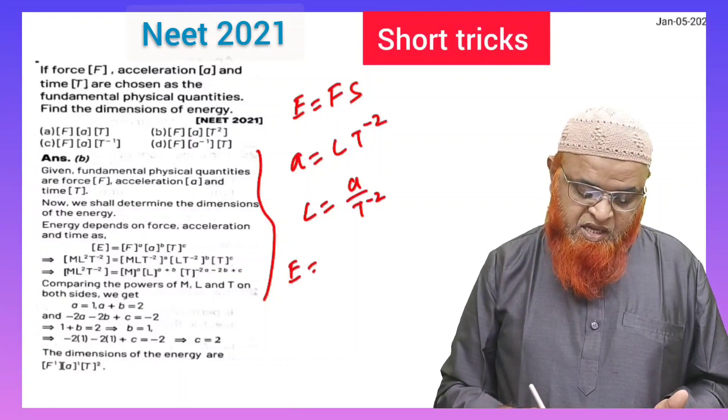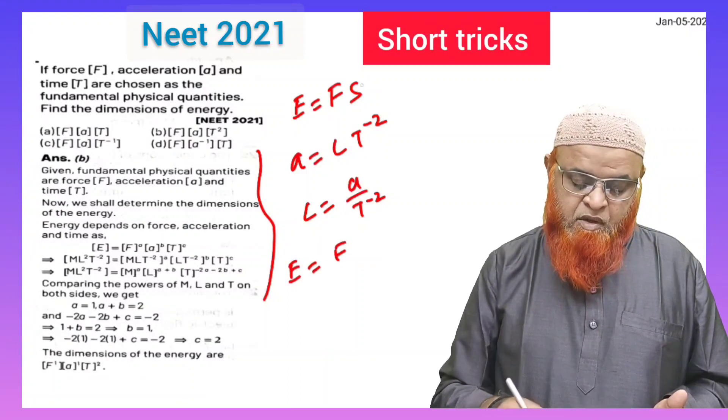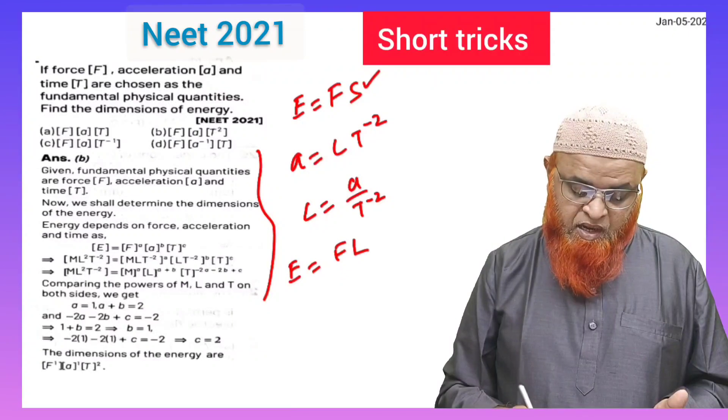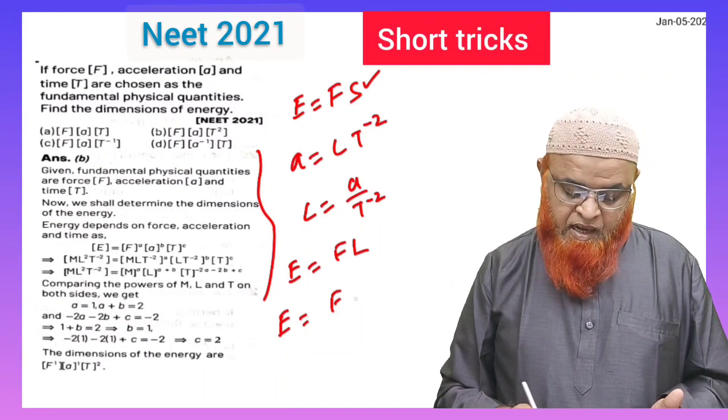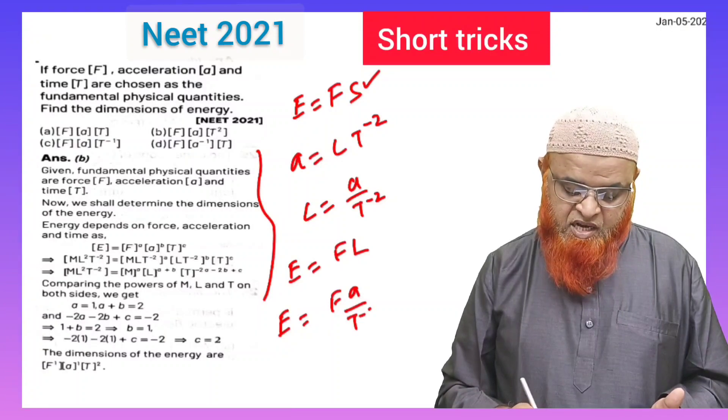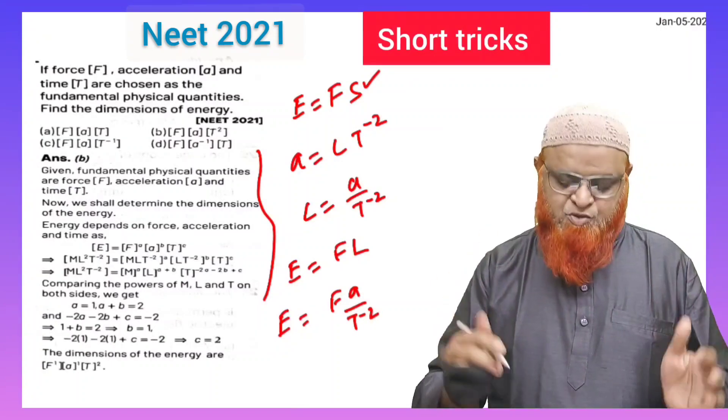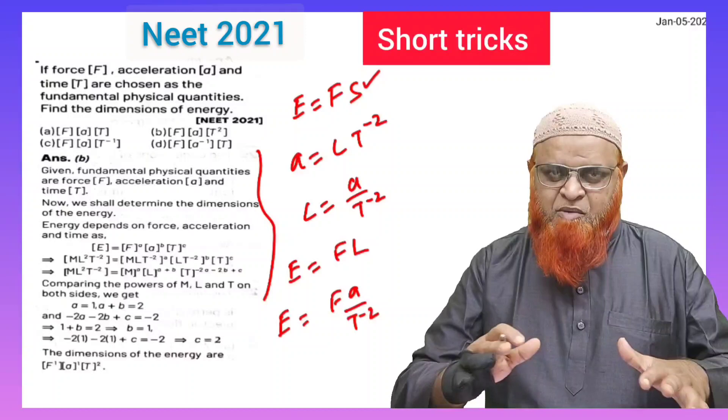And you all know energy or work done, both are going to be same. Force into displacement can be taken as force into length here. You just write in terms of length. Length can be taken as acceleration divided by T power minus 2. That's it, your problem is solved completely.